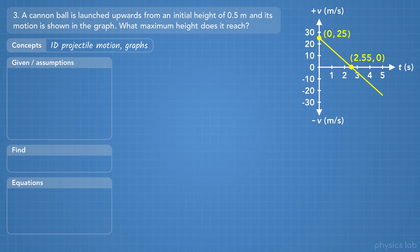Let's read the problem again and find the important information. A cannonball is launched upwards from an initial height of 0.5 meters, and its motion is shown in the graph. What maximum height does it reach? So the ball is only moving in the y direction, we know the initial position, and we want to find the y position at the maximum height.